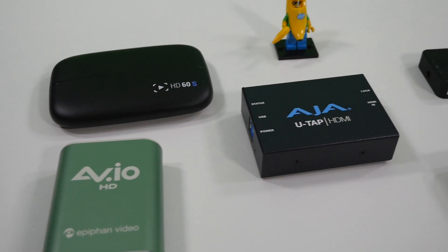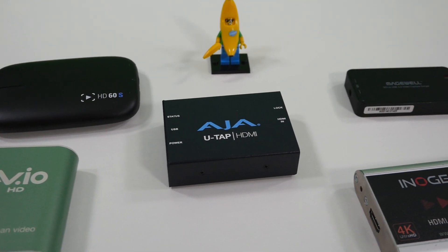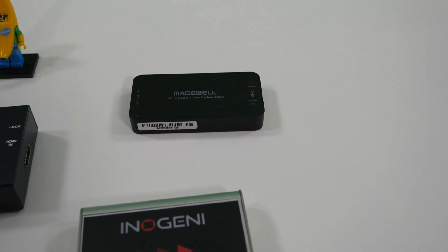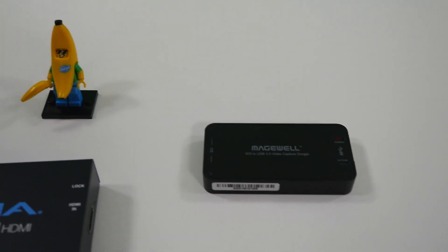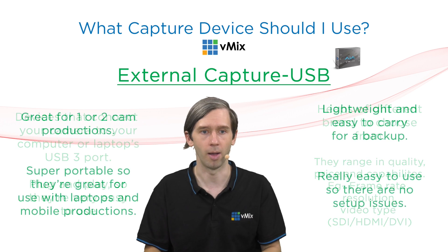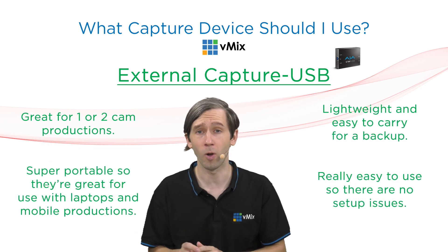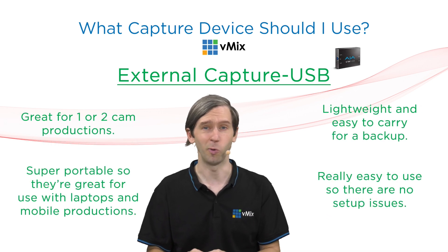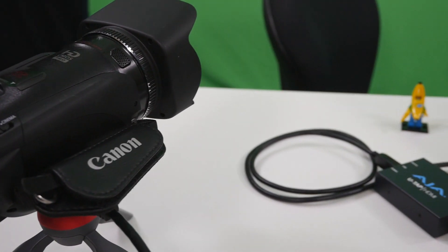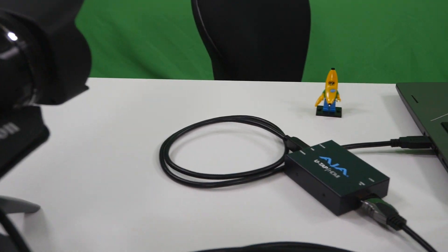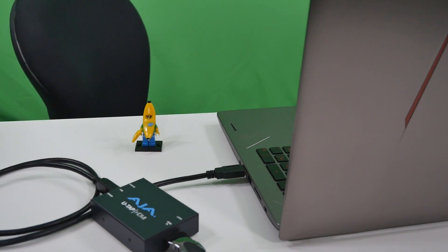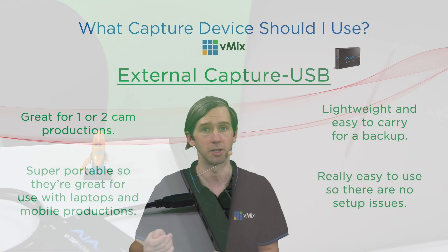There are plenty of different options out there available to buy. They range in quality, price, and capability — some might only support certain frame rates or resolutions, and they have different connections like HDMI, SDI, or DVI. They're really good for one or two camera productions, so you can easily have one HD camera, set this up, and bring in really good quality video to your live production. They're great for mobile use — really lightweight, so you can throw a couple in a bag and they're easy to set up each time, just plug and play.